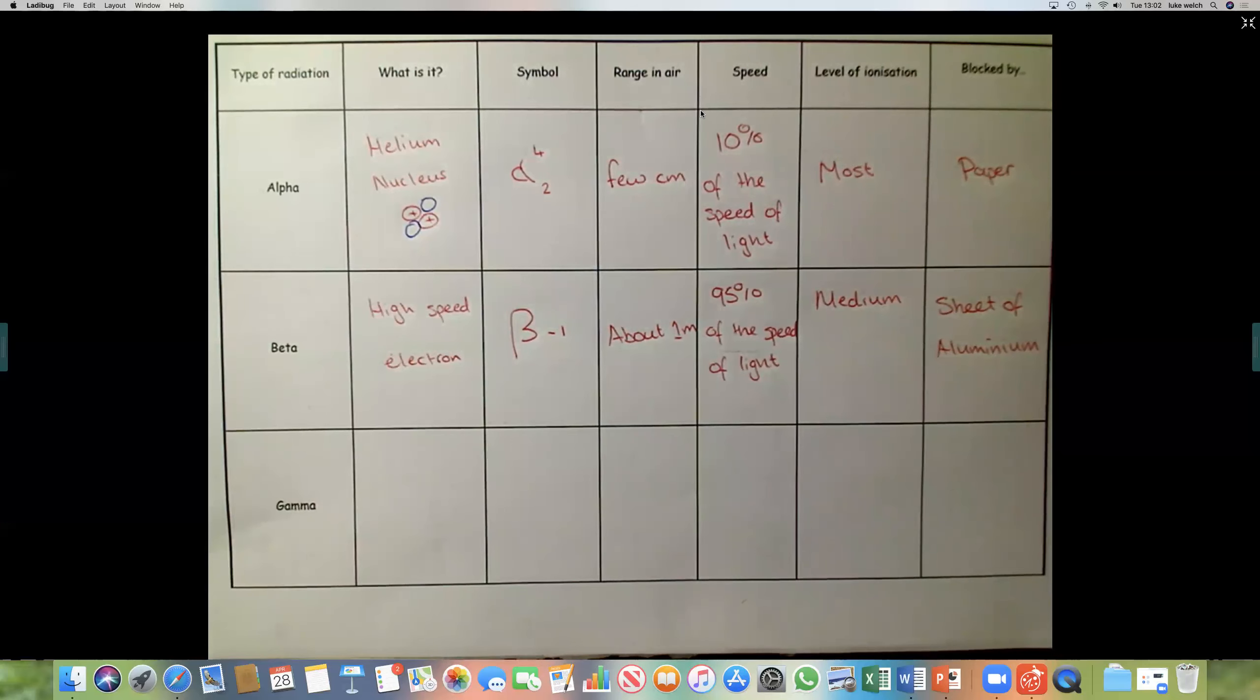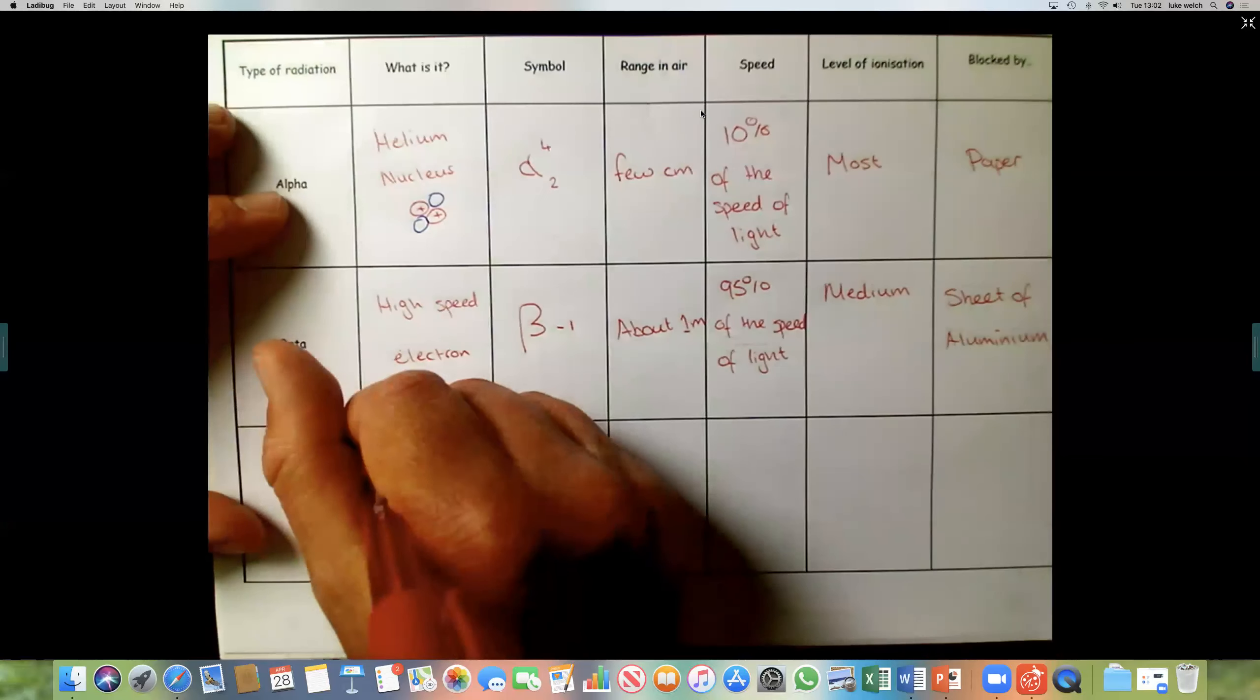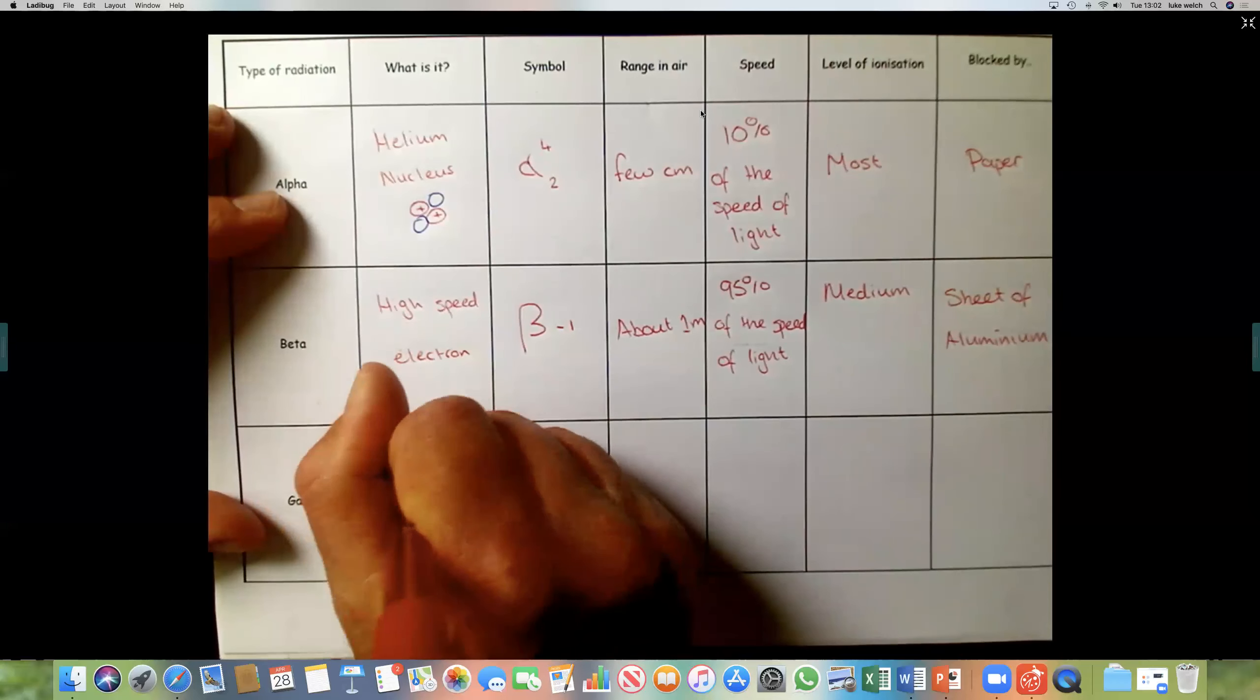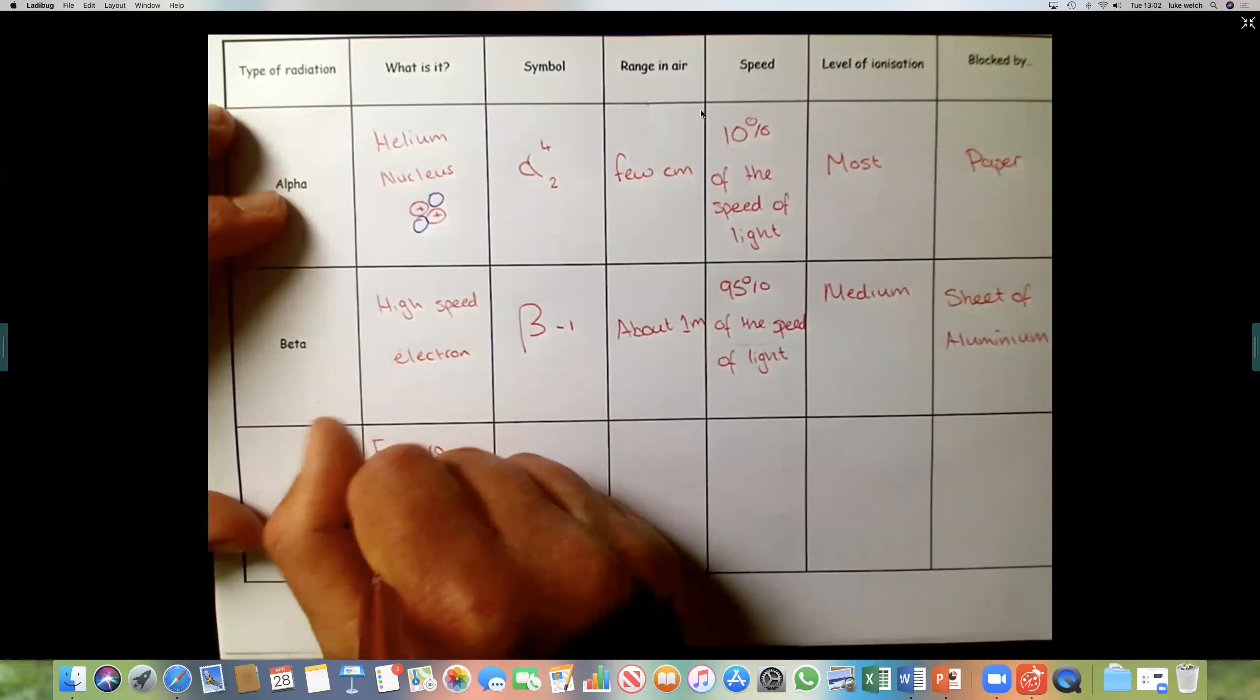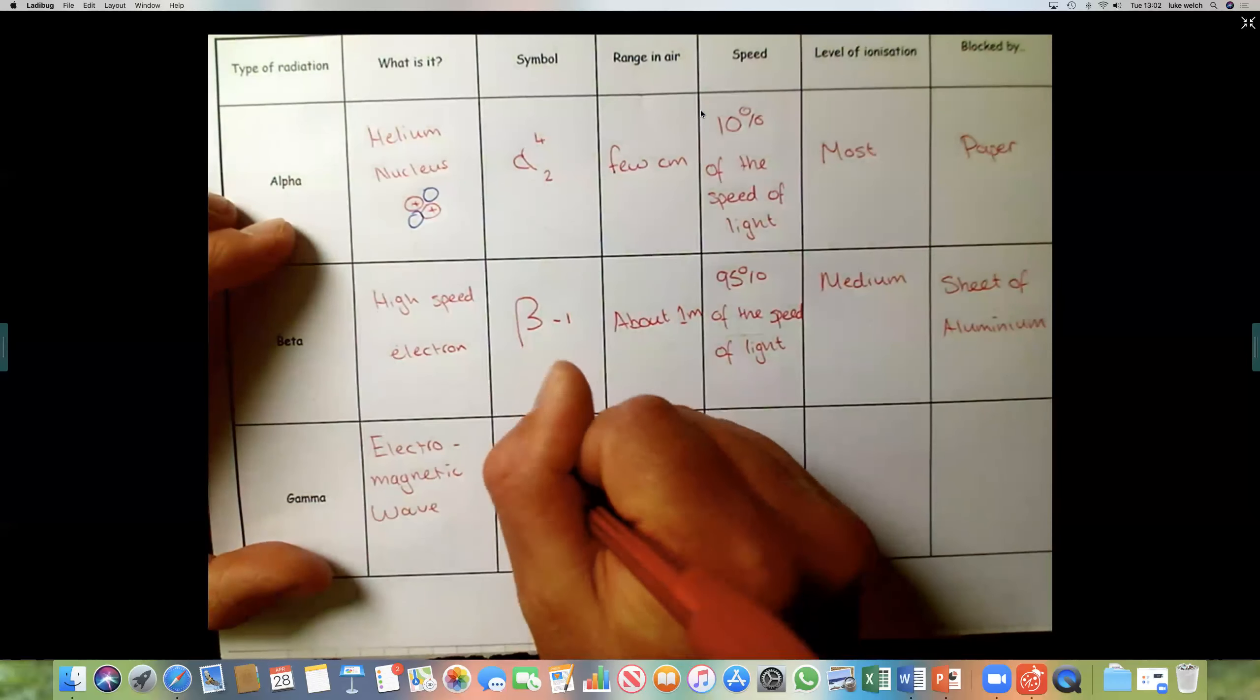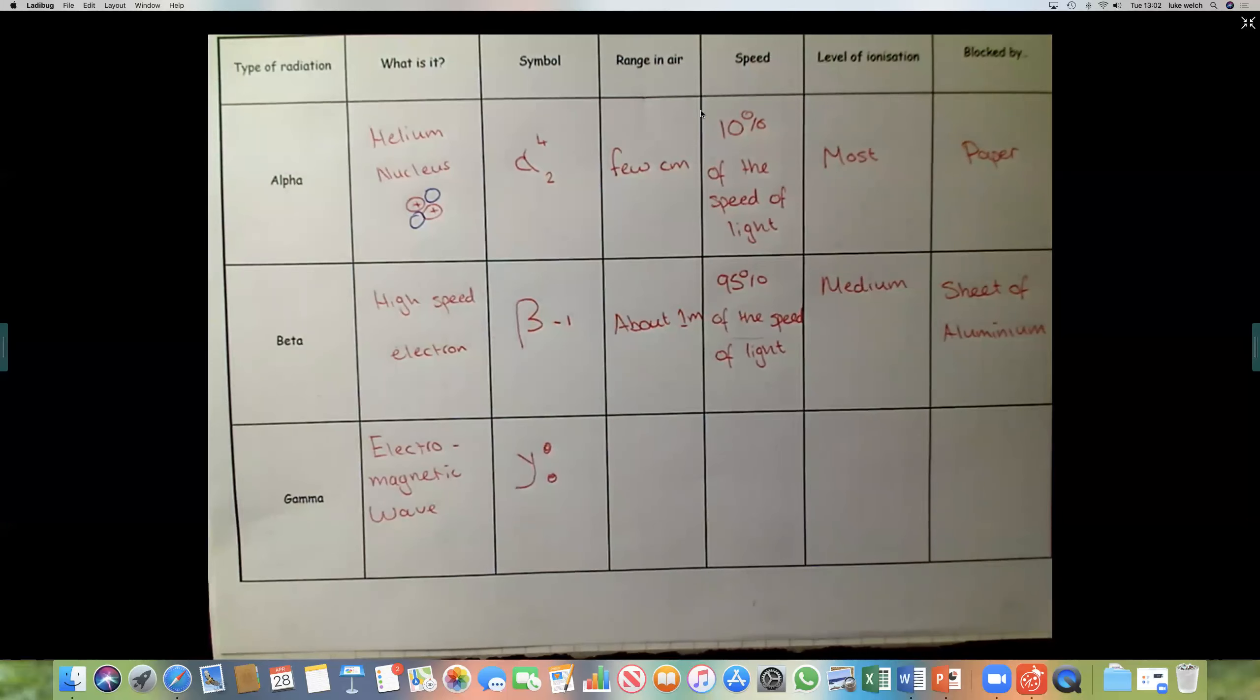Moving on. Finally, gamma radiation. And this is not a proton, neutron or electron. Gamma radiation, as you may remember from a previous topic, is an electromagnetic wave. And what that means is, it's not gained or lost any protons, neutrons or electrons. And the symbol is a Y. Because it's not lost anything, we write zero, zero to show it's not lost any subatomic particles.